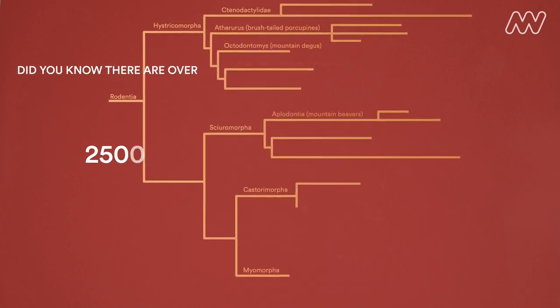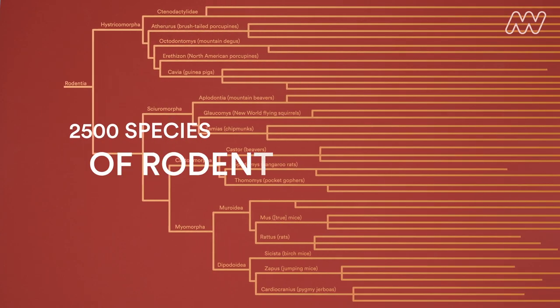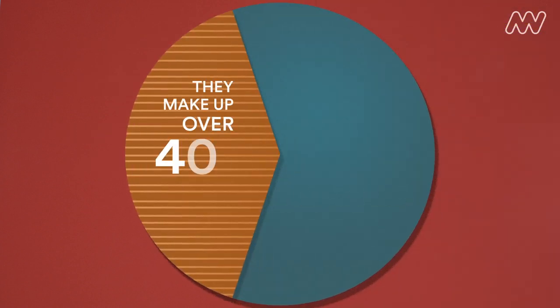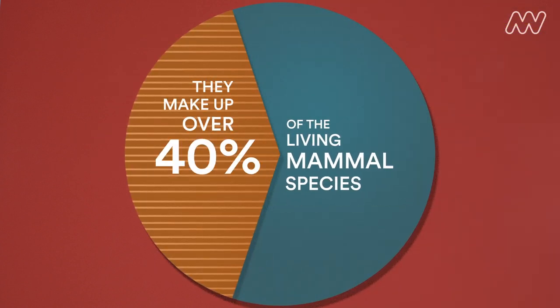Did you know there are over 2,500 species of rodents alive today and they make up over 40% of the living mammal species?